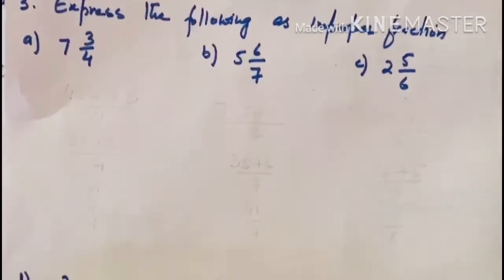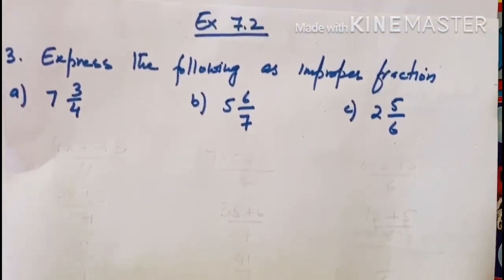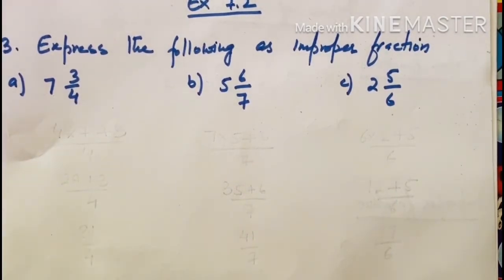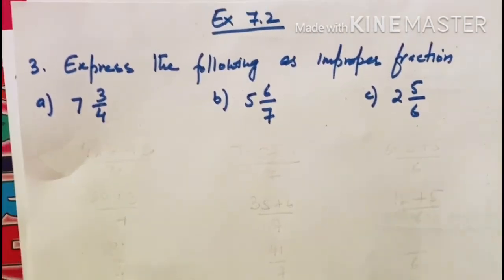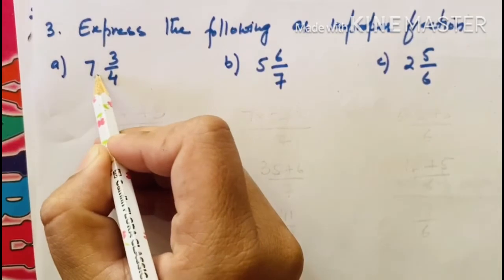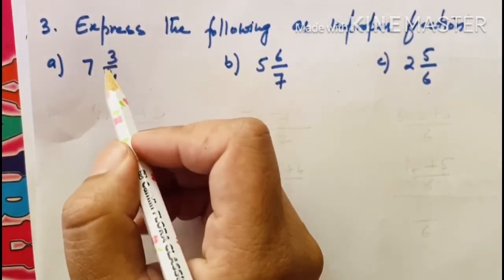Next we are going to do is question number 3, exercise 7.2. Express the following as improper fraction. Now you have to convert this mixed into improper fraction. Very simple. You just have to multiply this denominator with whole number and add with the numerator.